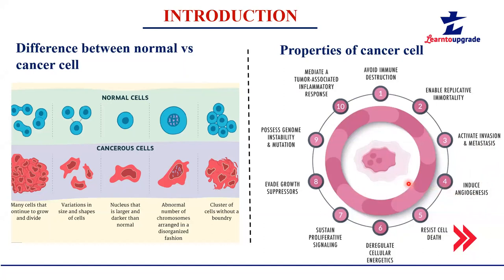Another important property is that cancer has an inbuilt capacity to induce angiogenesis, which is the formation of new blood vessels. Blood vessels are important because they allow nutrient supply and gas exchange. Since cancer induces so much angiogenesis, it also helps in the survival of cancerous cells. Additionally, cancerous cells have mutations that confer resistance, and all these properties together allow cancer to avoid our immune system and survive in our body.